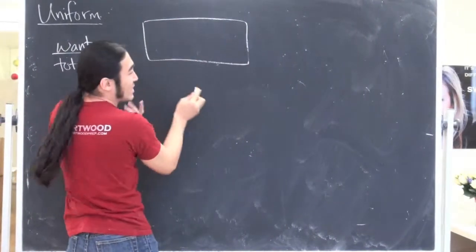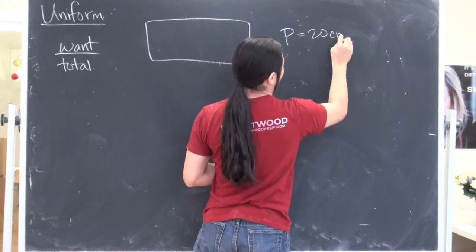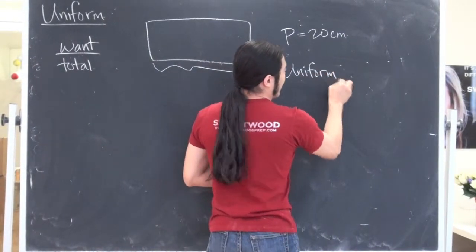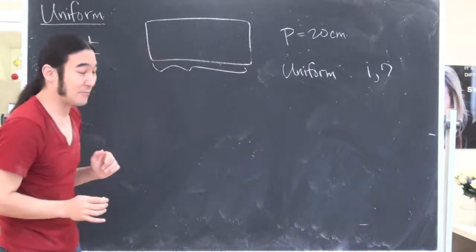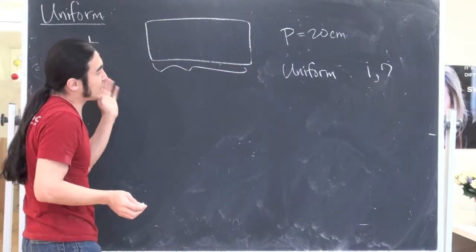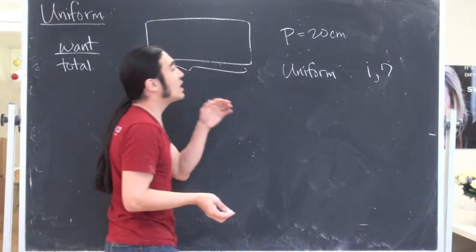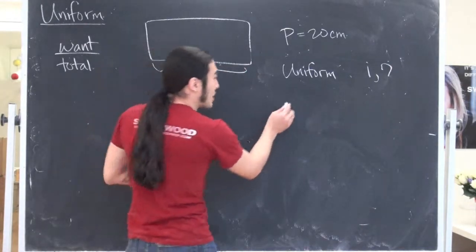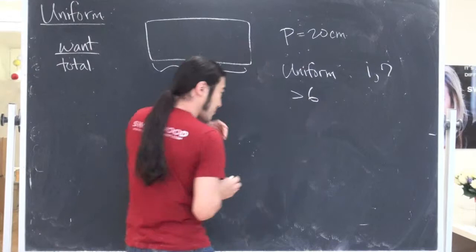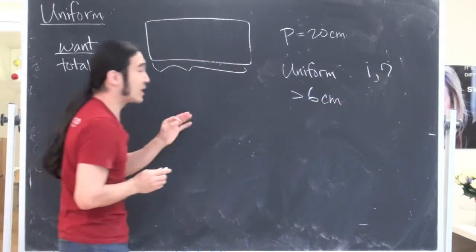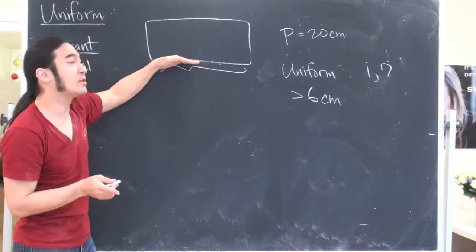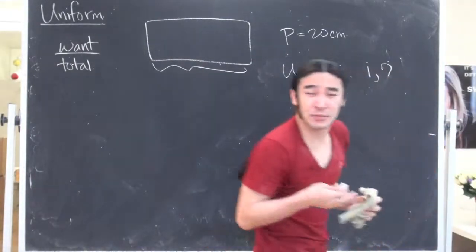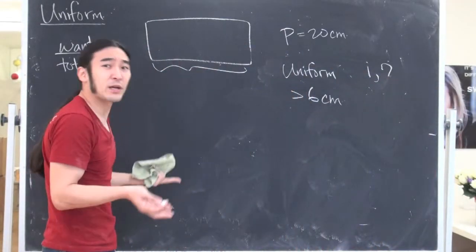So his question was this: You have a rectangle, and the perimeter of the rectangle is something like 20 centimeters. And its length over here is uniform from 1 to 7 centimeters. Okay, so let's go ahead and work this out. And obviously I forgot the question. So the question was, what is the probability that if you look at the two sides, the longer of the two sides is greater than, say, 6 centimeters.